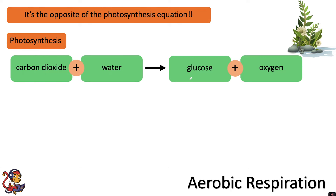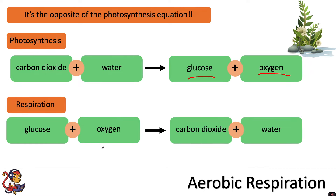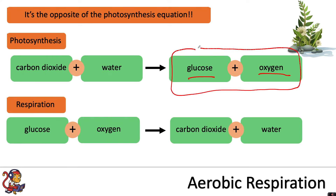Plants can take the glucose and oxygen they've made and straight away use it for their own respiration, because it's the opposite equation: glucose and oxygen making carbon dioxide and water. Importantly, plants making glucose and oxygen through photosynthesis also means that other animals, including humans, can use these products for respiration.